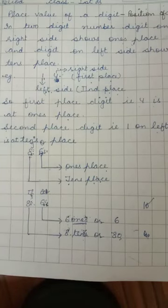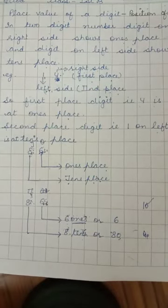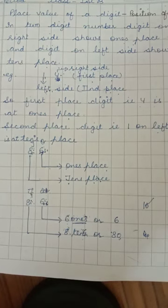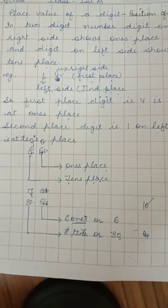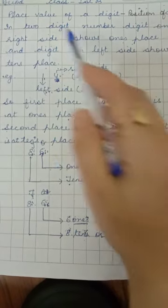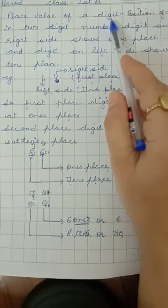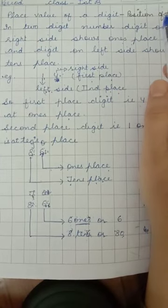Good morning students. In the previous video we have done place of digits in a two-digit number. Now in this video we will learn how to write the place value of each digit in a two-digit number. First of all, what do you mean by place value? Place value of a digit means the position of the digit.